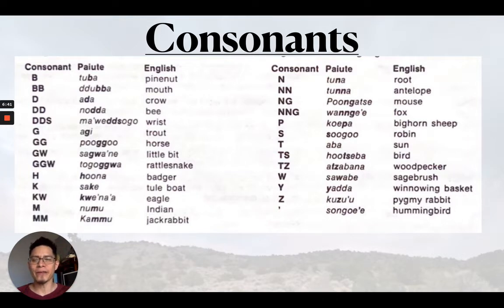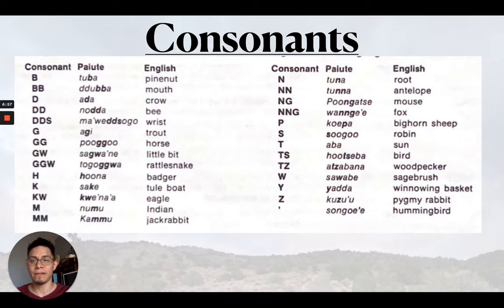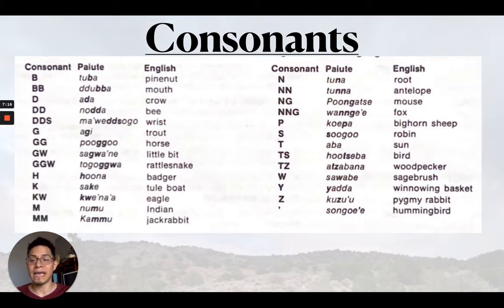Now that you're familiar with the difference between the singular consonant and the double consonant, let's look at all of these to learn the sounds of this dialect. We already saw b — 'dba' for pine nut, and the double b 'dba' for mouth. Same with 'ara' for crow. The double d, 'noda,' 'noda,' for bee. Other dialects would say 'nota.' The double ds in 'ma'widzogo,' meaning wrist. Single g for 'agai' meaning trout, and the double g 'buku,' horse.